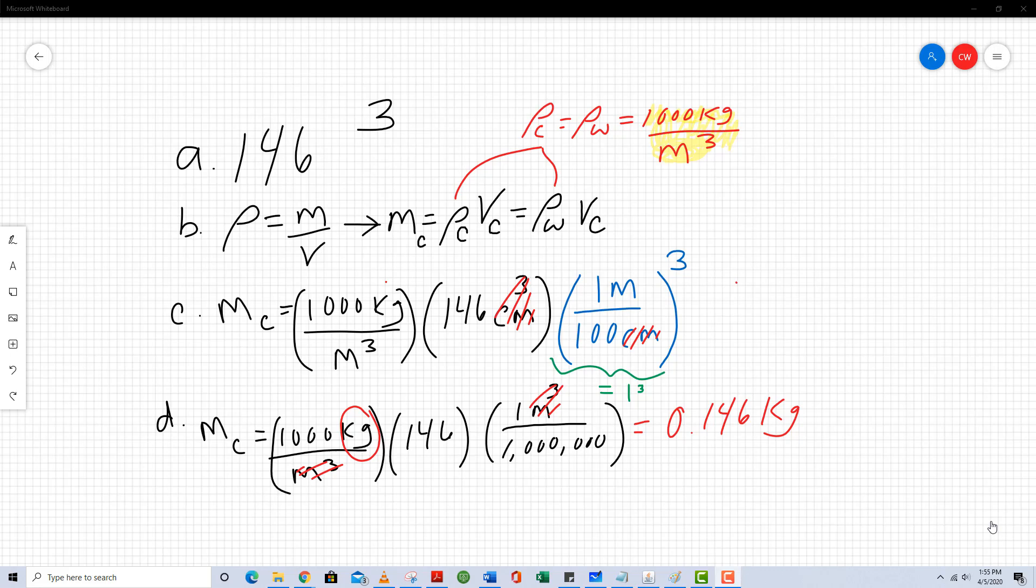I also know that the problem said to treat coffee as if it were water. So that means it's going to have the same specific heat capacity and it's going to have the same density as well. So look what I'm doing in step B. The mass of the coffee is the density of the coffee times the volume of the coffee, which is the same thing as the density of water times the volume of coffee.